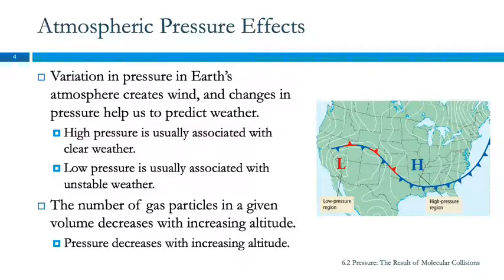We've got a digital weather station here in the classroom. Today the pressure is 30.29 inches of mercury, which is kind of medium, and it's showing partly cloudy to cloudy icons. How does this little thing predict the weather? Is it talking to the meteorologist at KC24?